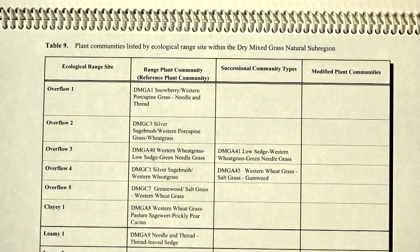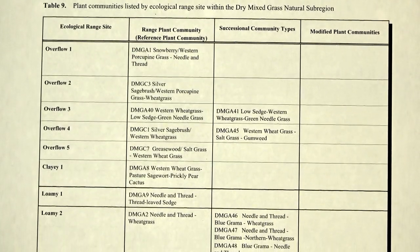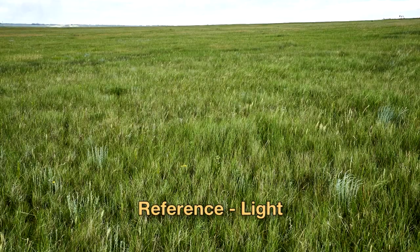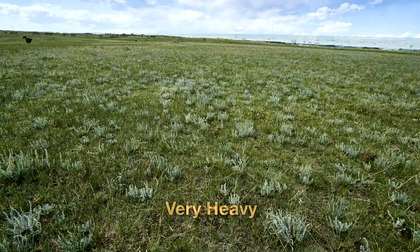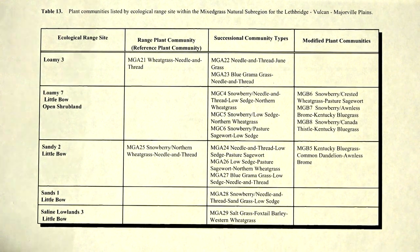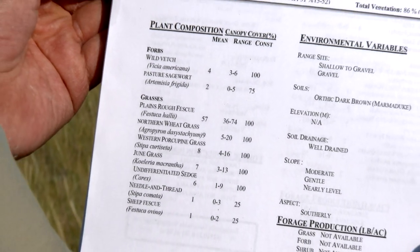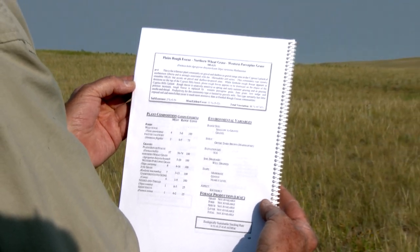Each range site in the guide will have one or more reference plant communities, which define site potential under like grazing disturbance, plus additional successional communities that reflect additional levels of grazing disturbance like moderate, heavy, and very heavy. The guides may also capture modified plant communities where non-native species have been dominant. So range plant community guides are a reference to ensure that each unit of rangeland is evaluated appropriately based on its site potential.